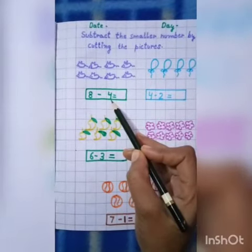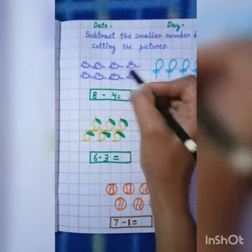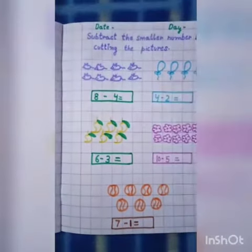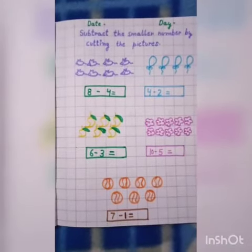So, we will cut the four rats. One, two, three, four. Now, we have cut four rats. Now, we will count how many rats are left.